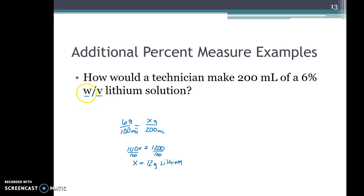These guys are not like units. We have grams, we have milliliters, so they're not like terms. When we add and subtract we have to have like terms so we cannot subtract here. So we would dissolve the 12 grams of lithium in the full 200 mLs of whatever our solvent is.